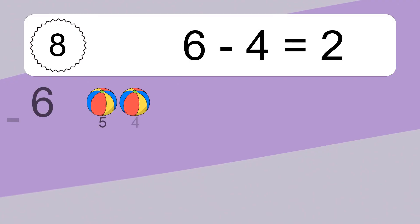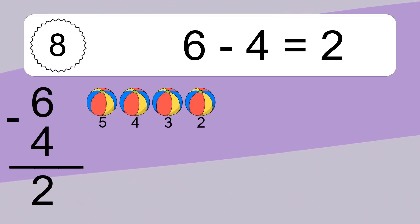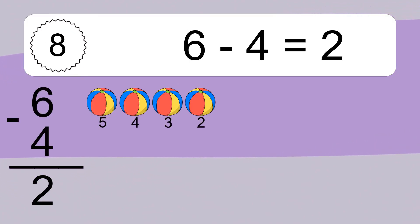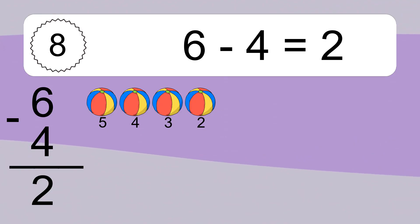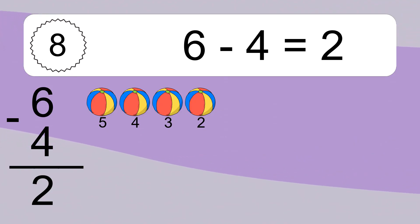6 minus 4 equals what? 6 minus 4 equals 2. Let's count it. 5, 4, 3.